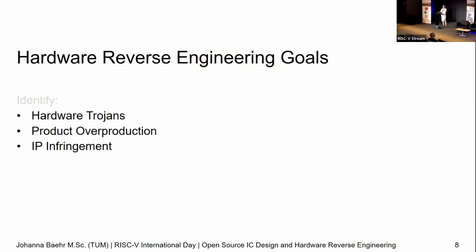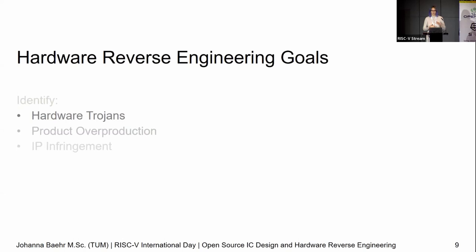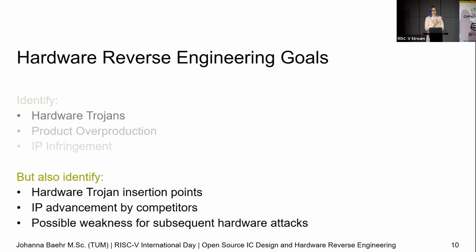On the other hand, why would we do reverse engineering? It seems like a lot of effort. We do it to identify hardware Trojans — really trying to figure out if there's something in our chip we didn't want. It can also be done for product overproduction or IP infringement. In an open source scenario, we don't really care about the last two — it's open IP. What we do care about is hardware Trojans, because they become much simpler to insert. But we're not always the good guys in security — if you do something, you also sort of help the other side.